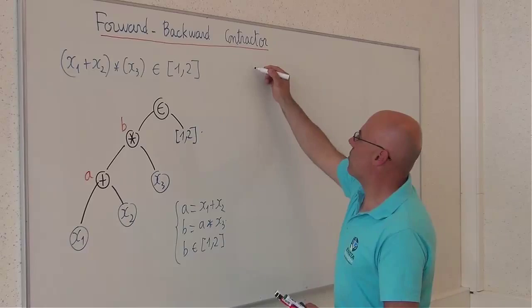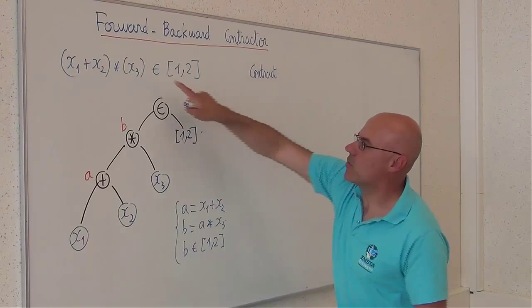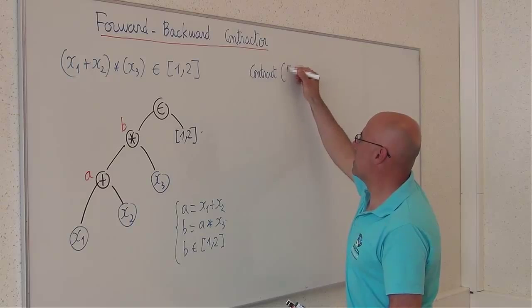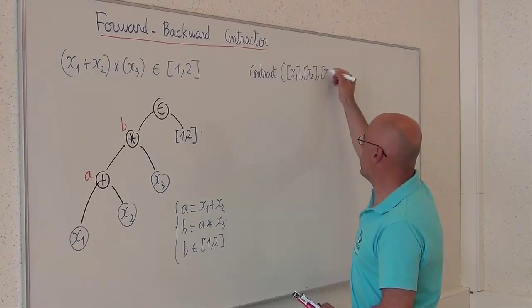So, the following contractor, with respect to this constraint, will emit as input x1, x2, and x3.